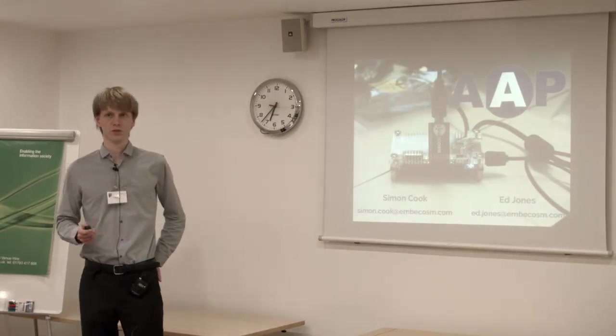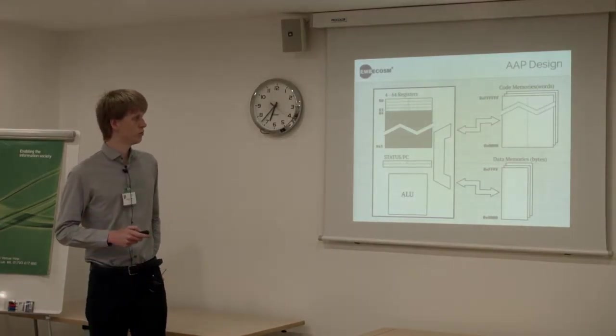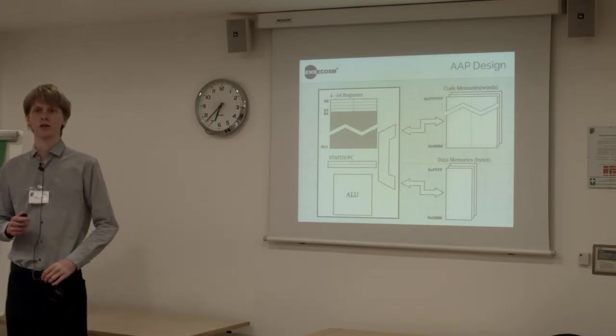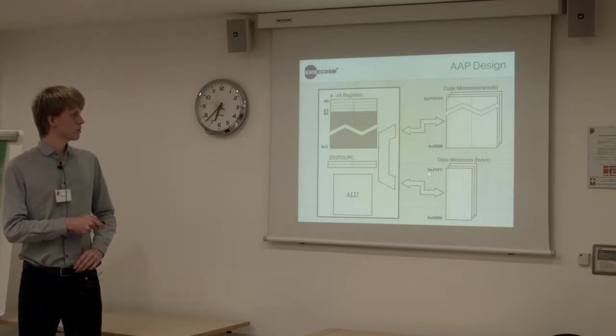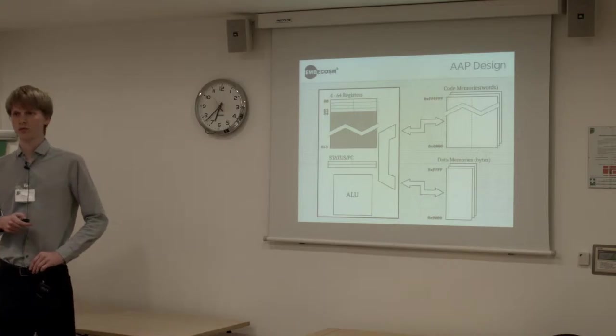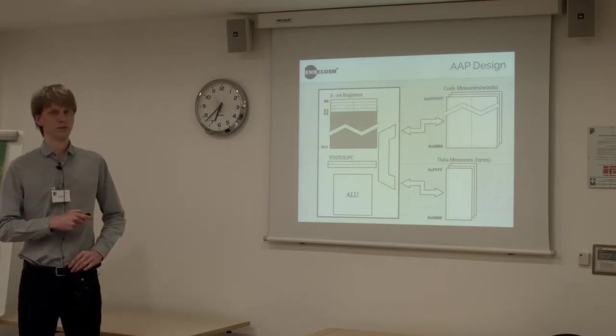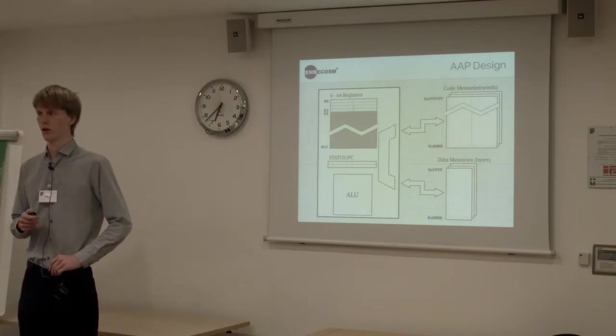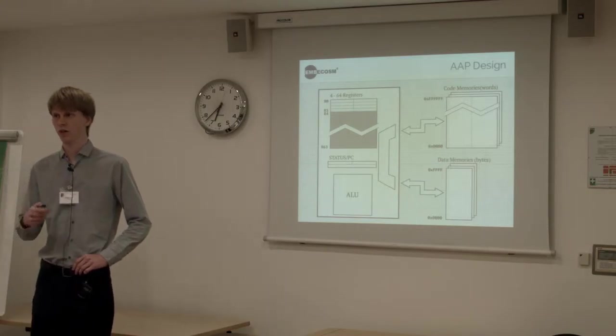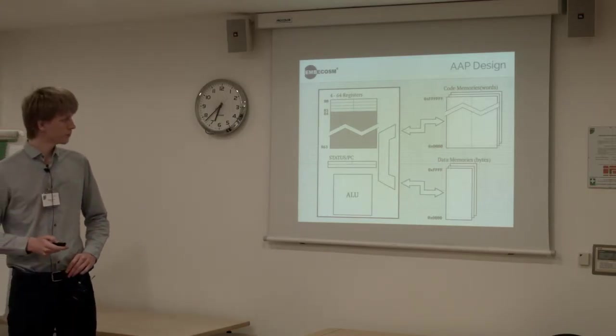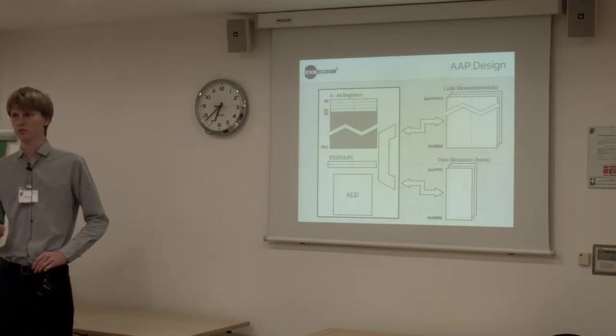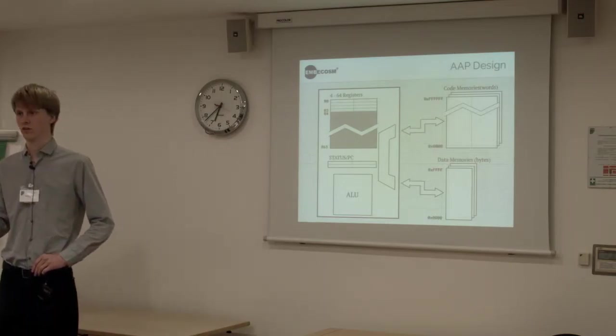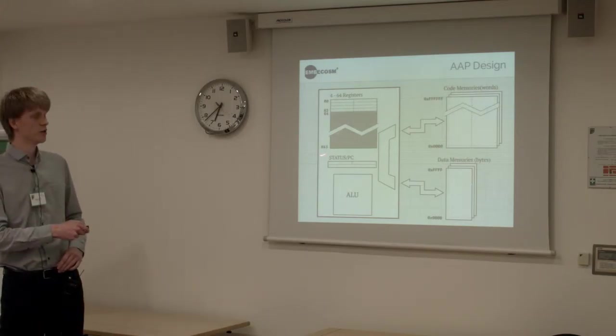So first of all I'm going to go into what AAP is. This is what it looks like, a high level block diagram. It's Harvard architecture, so the code and the data are completely separate. We've got a variable number of registers, which varies between 4 and 64 registers, and they're 16 bits wide each. All of the operations work on 16 bits. We've got 16 bits worth of data memory, so 64 kilobytes of data memory, and 24 bits of code, which is word addressed, so we've got 16 megawords of code maximum addressable.